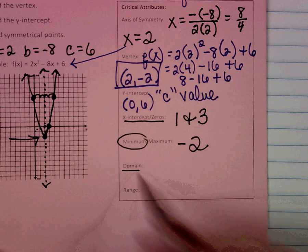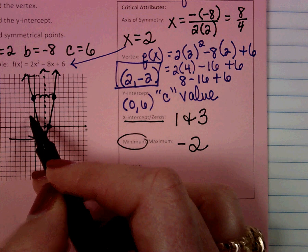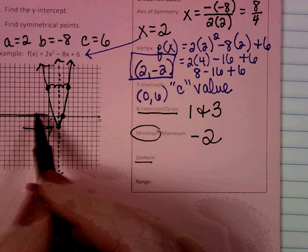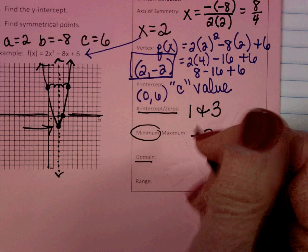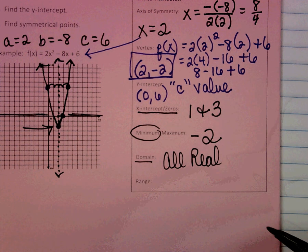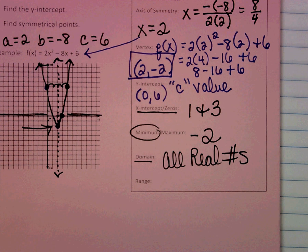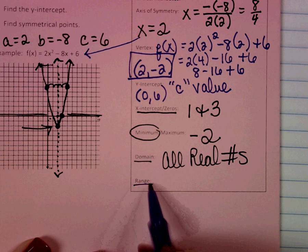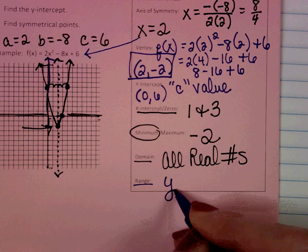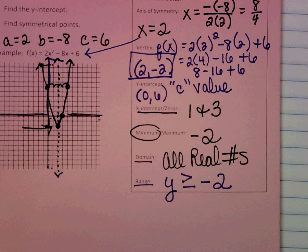The domain describes all of our x-values. Our graph is going to continue going out in both directions, very slowly, but it will continue. So it includes all x-values, and 99% of the time, unless we have two distinct endpoints, the domain of a quadratic — whether it opens up or down — is all real numbers. The range describes our y-values. Our lowest y-value is negative 2, and the graph goes up from there, so our y-values are greater than or equal to negative 2.